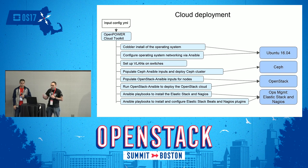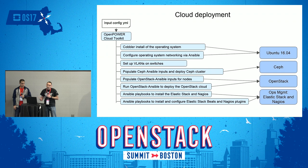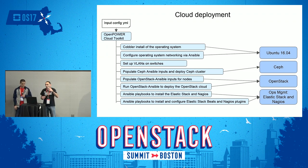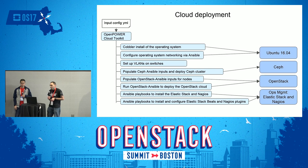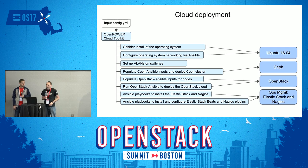It then pre-populates all the inputs for your Ceph Ansible run, so your Ceph cluster gets set up automatically. It also sets up a lot of the inputs for OpenStack Ansible. OpenStack Ansible is a great OpenStack deployment tool — there are a bunch of variables you can configure. If you've already installed the operating system and know all the IP addresses, it pre-populates those and takes a pause so you can tweak other variables, then kicks off the run to install your OpenStack cluster across all your nodes. It then continues to install, set up, and configure Elastic Stack — also known as the ELK Stack — as well as Nagios and common plugins. At the end, with very little human interaction, you can go from top to bottom and have an open cloud running with open source software on top of open hardware.